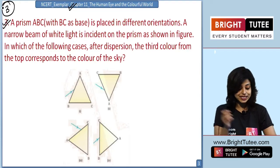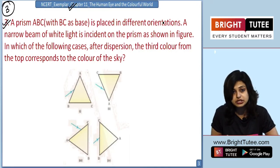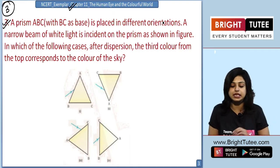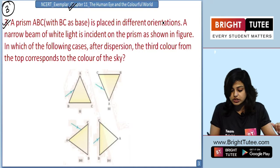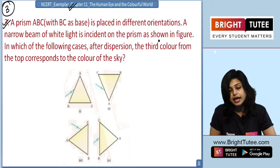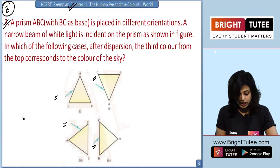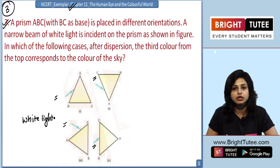The problem reads: a prism ABC with BC as the base is placed in different orientations. Now as you can see in the 4 images, the prism ABC is placed in different orientations. A narrow beam of white light is incident on the prism as shown in the figure. Wherever you can see the blue color line with an arrow over it, it is showing the white light incident on the prism.